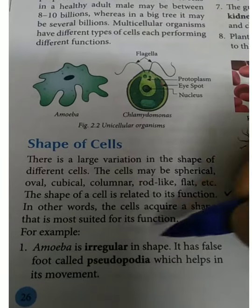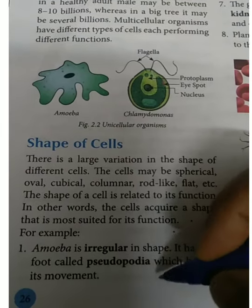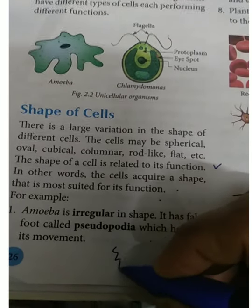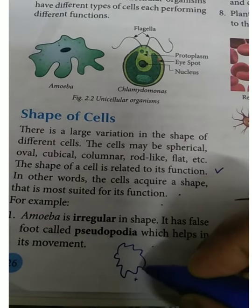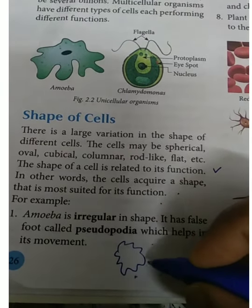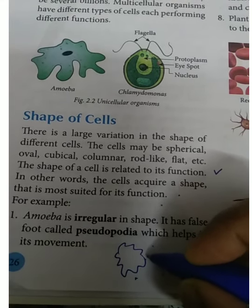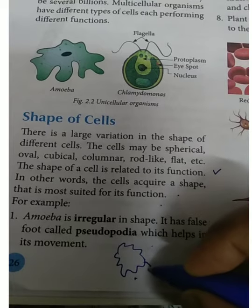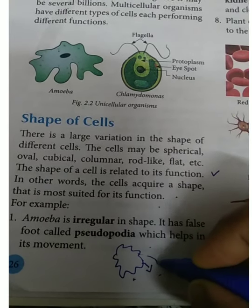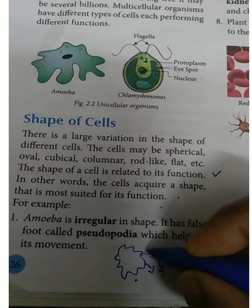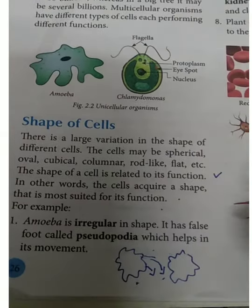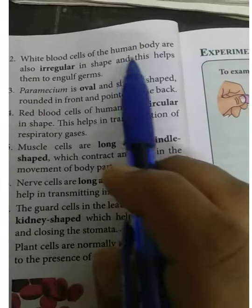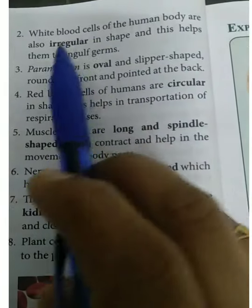Amoeba is irregular in shape and has false feet called pseudopodia. It moves by pushing the liquid inside the cell toward one point, extending in that direction. That is why it has an irregular shape. White blood cells of the human body are also irregular in shape, and this helps them to engulf germs. In the human body there are RBCs and WBCs.